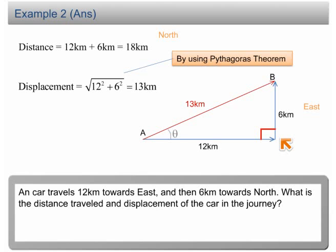Let us assume that the angle of the displacement from the horizontal is theta. We can then find the value of theta by using trigonometry.